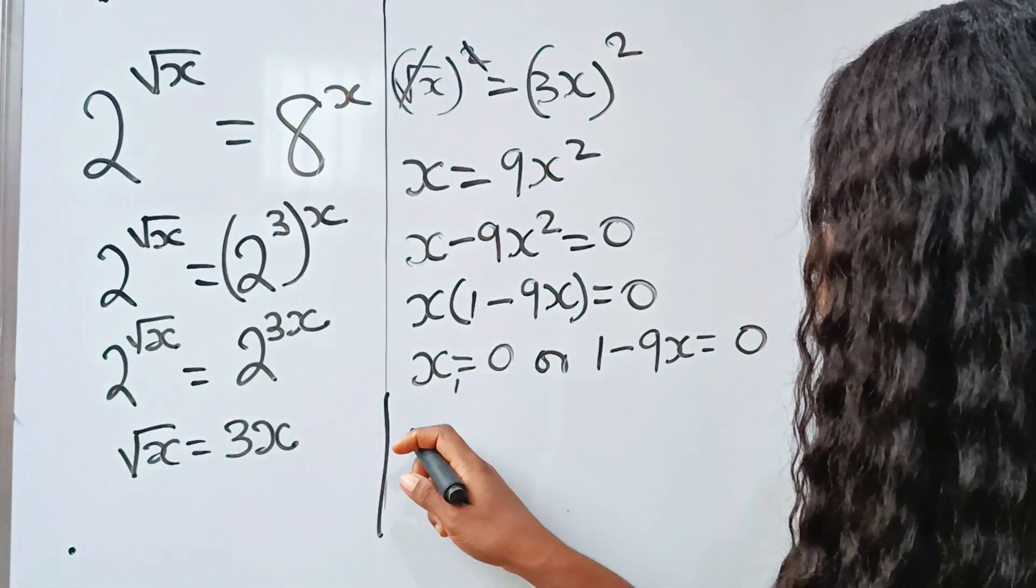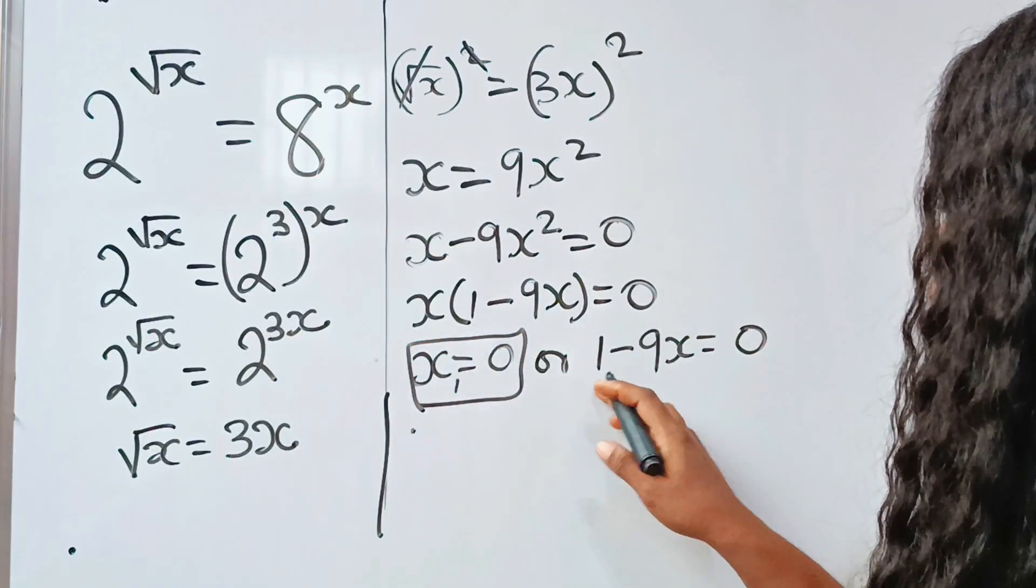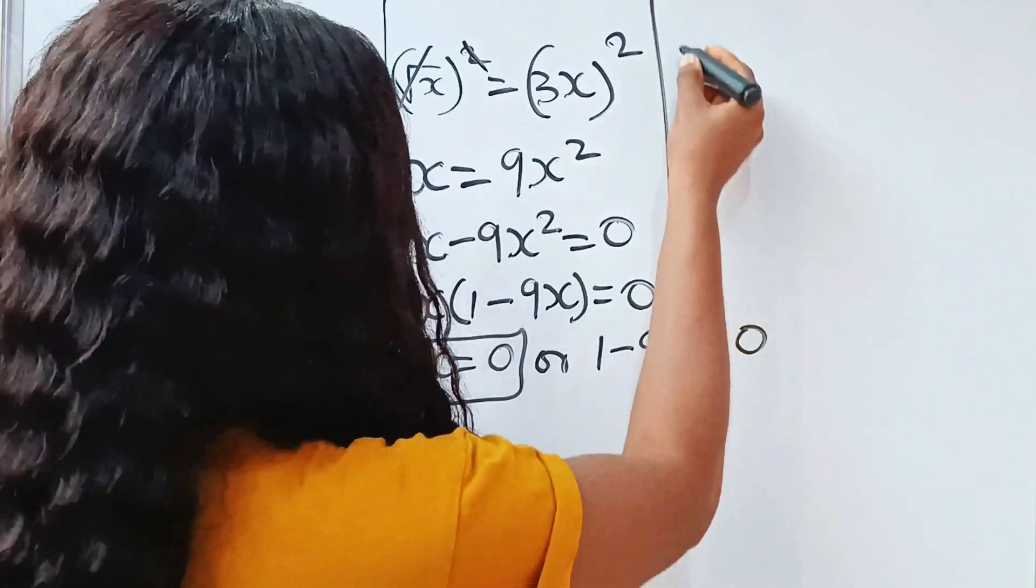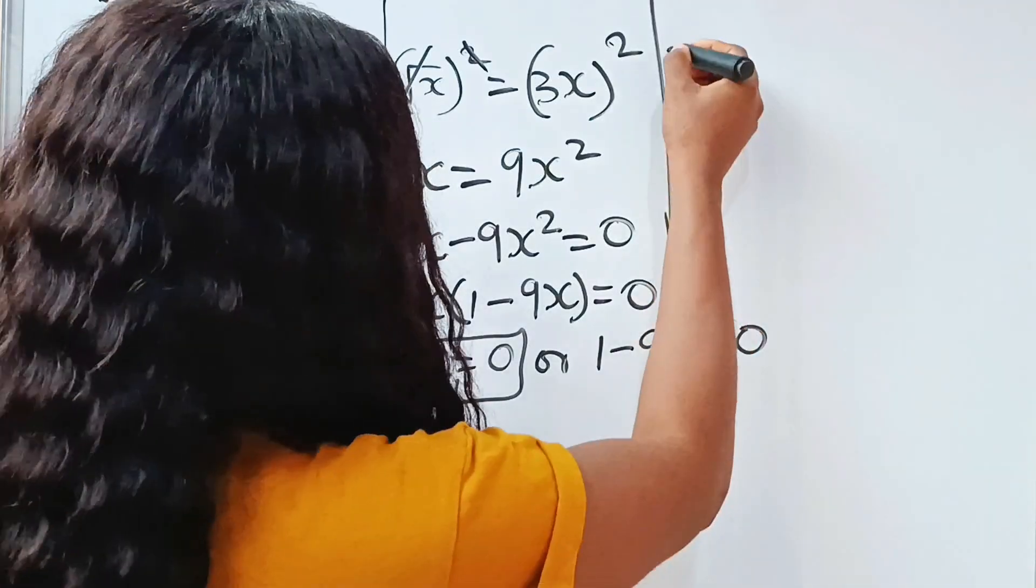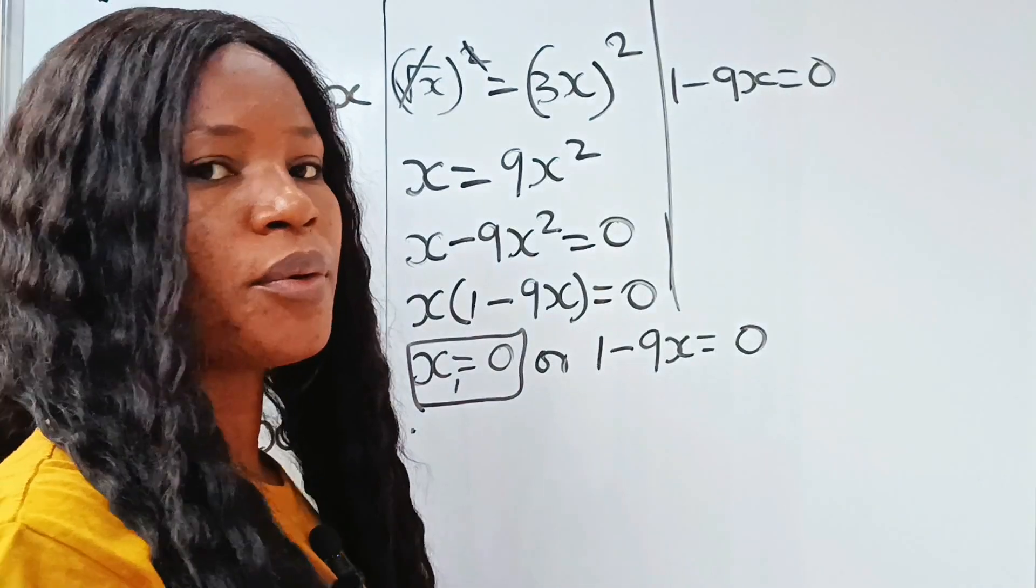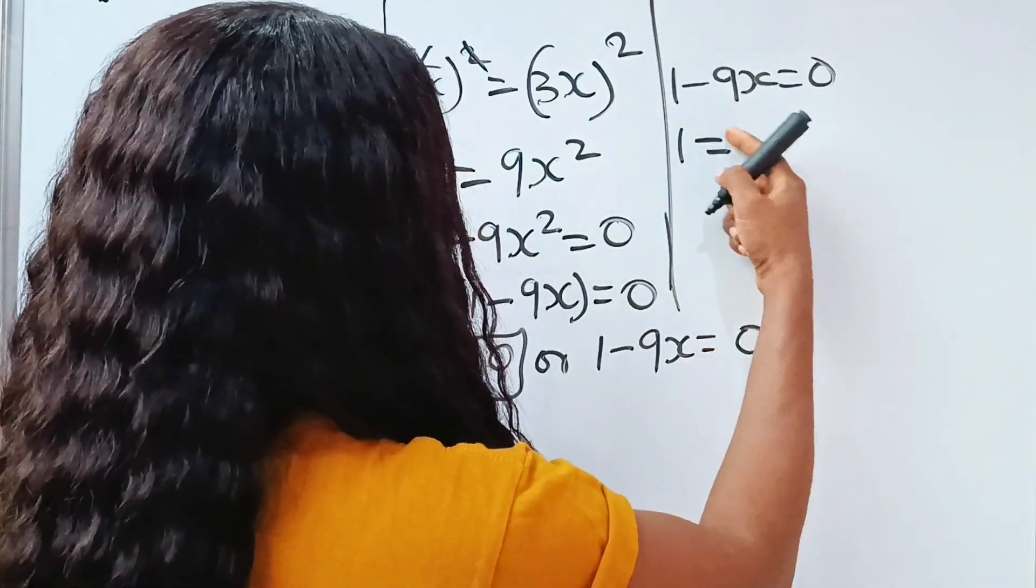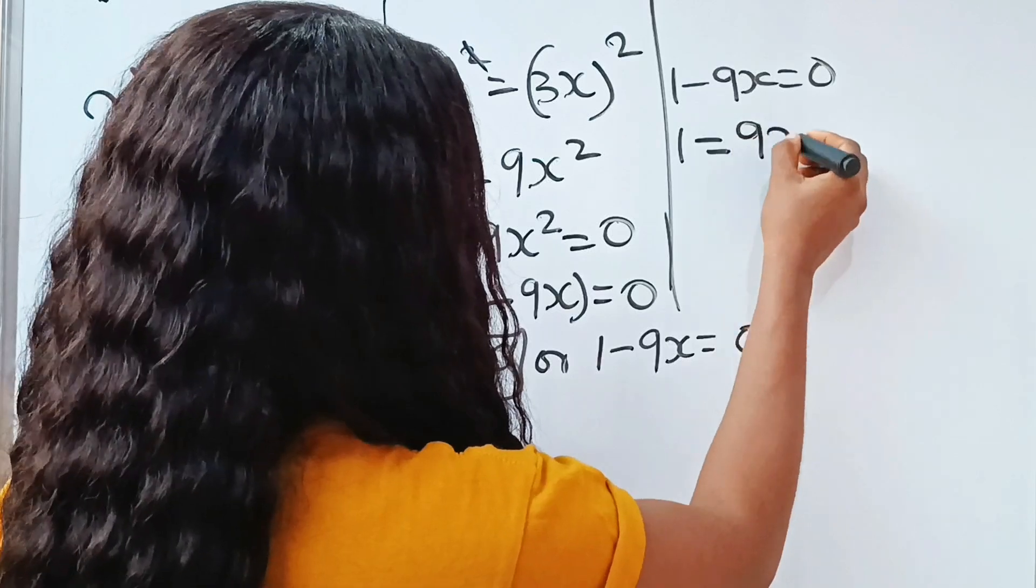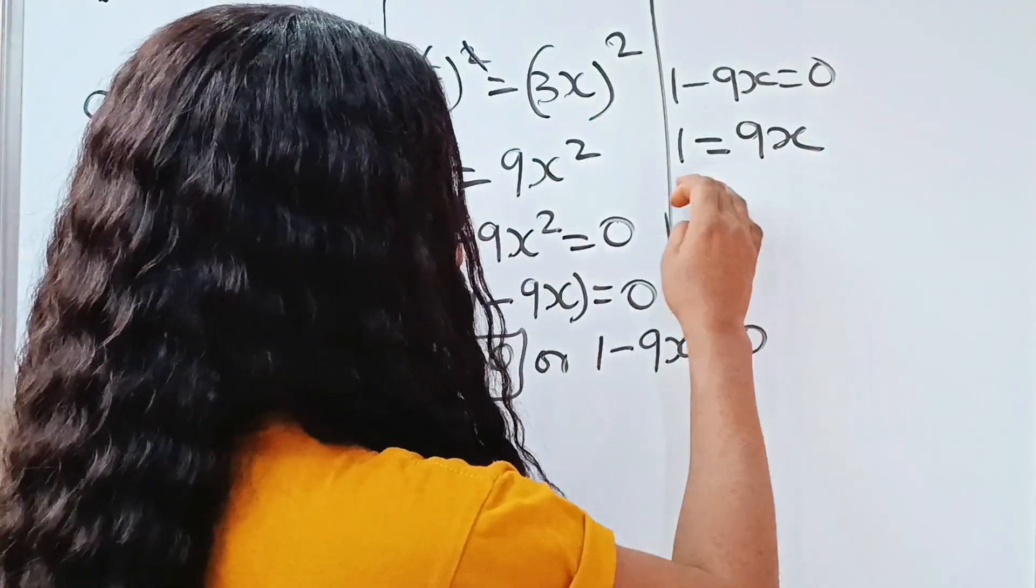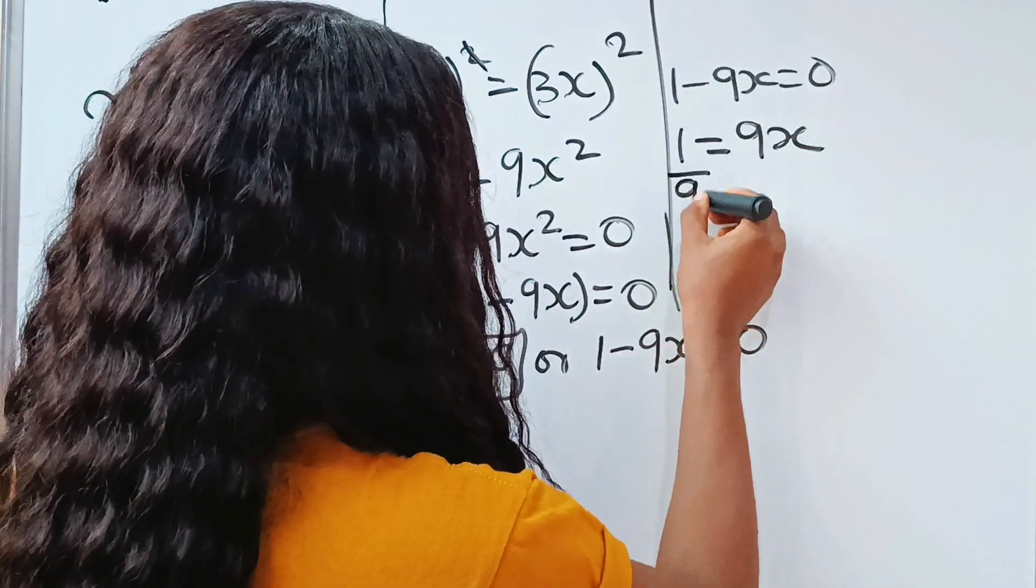So if we continue solving, we have established the best value of our x. Let's concentrate on this one now. This one says that 1 minus 9x is equal to zero, so that means that 1 is equal to 9x. And since we are looking for the value of x, let's divide both sides by 9 so that 9 can cancel out.